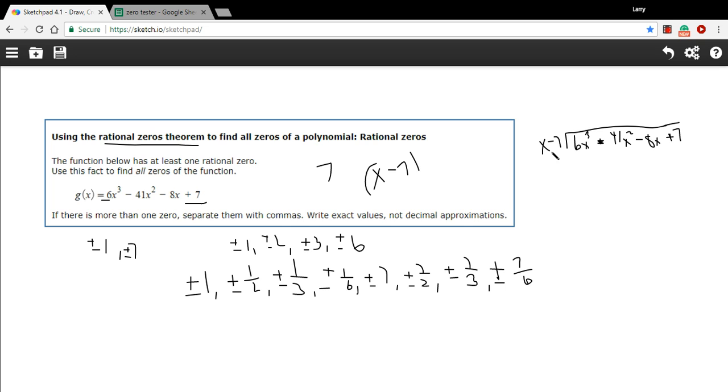So minus 41X squared minus 8X plus 7. Each of the powers of X in descending order, starting with the highest one. Looks like we've got all of those. So we don't need to fill in any zeros there. And then you start by asking yourself, what would I have to multiply this X by to get 6X cubed? Well, you'd have to multiply it by 6X squared. And then we multiply by the whole thing. So 6X squared times X is 6X cubed. And 6X squared times negative 7 is negative 42X squared. Then we subtract. And you've got to be really careful with the signs. So this is 6X cubed minus 6X cubed. That's 0. That's exactly what we want. We want that leading term to disappear. And then this is negative 41X squared minus a negative 42X squared. So that's like plus 42X squared. So this comes out to be a positive X squared.